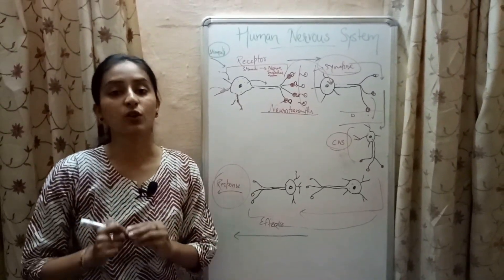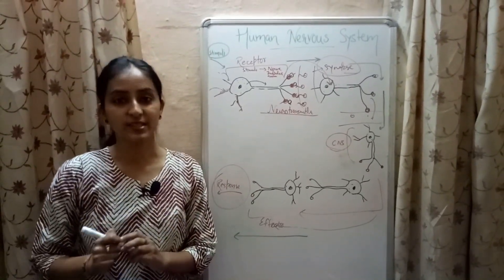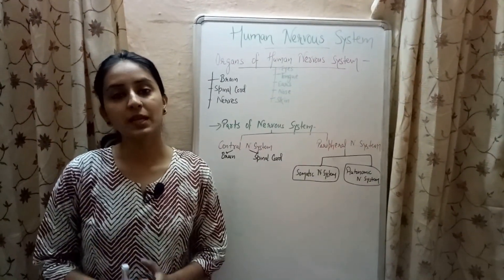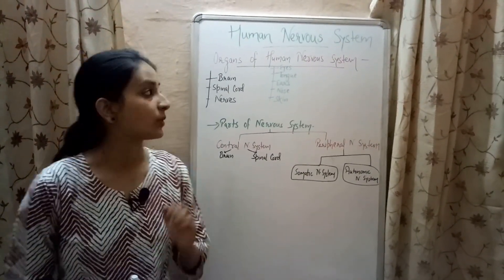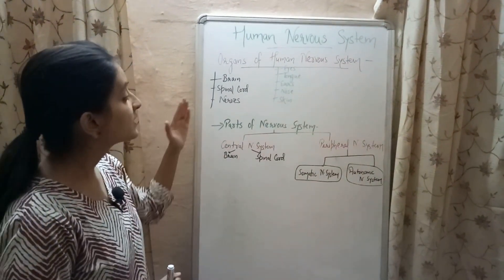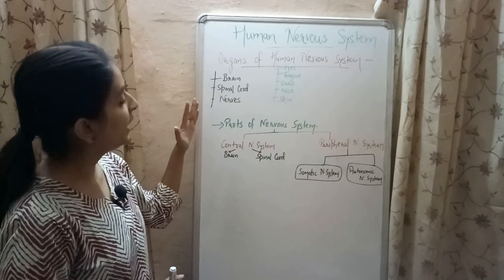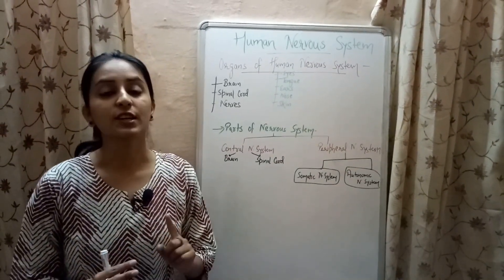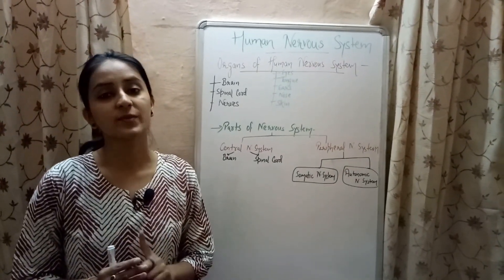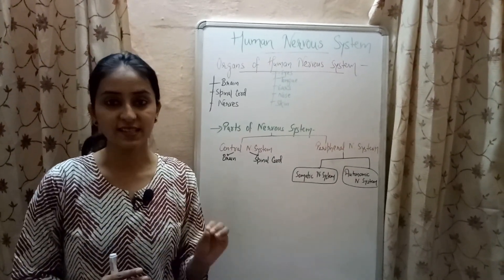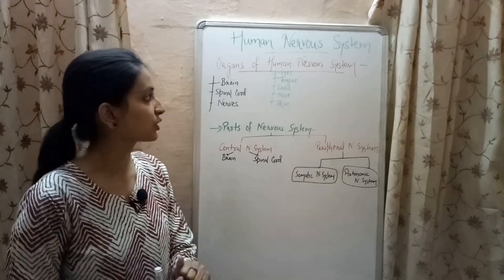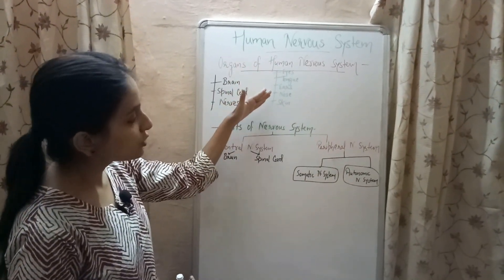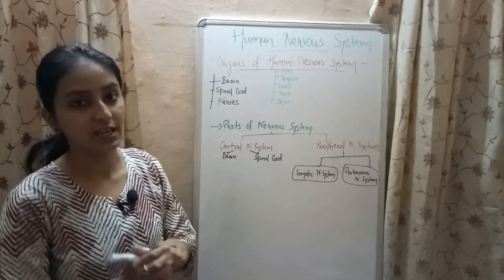Now let's study the organs of the human nervous system. There are three main parts: brain, spinal cord, and nerves. Besides these three main organs, the human nervous system consists of the sensory organs which include eyes, tongue, ears, nose, and skin.